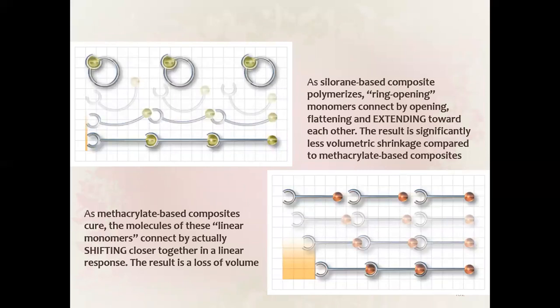Silorane-based composites polymerize by ring opening — polymers connect by opening, flattening, and extending toward each other, resulting in significantly less volumetric shrinkage compared to methacrylate-based composites. By contrast, methacrylate-based composites cure as molecules of linear monomers connect by shifting closer together in a linear response, resulting in loss of volume.